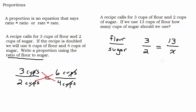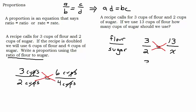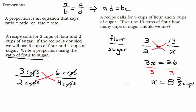I purposely picked a number that's not a nice multiple of three, so it's harder to do in your head. Using the cross product property — if a/b = c/d then a times d equals b times c — we get three times x equals two times thirteen. So three times x equals twenty-six. Dividing both sides by three gives us eight and two-thirds cups of sugar.